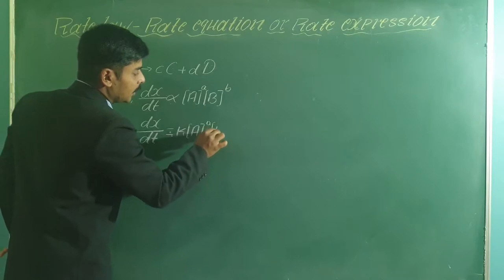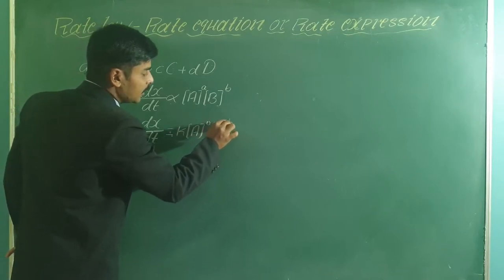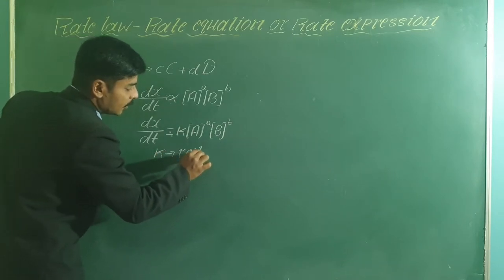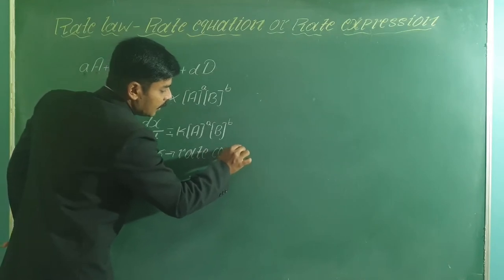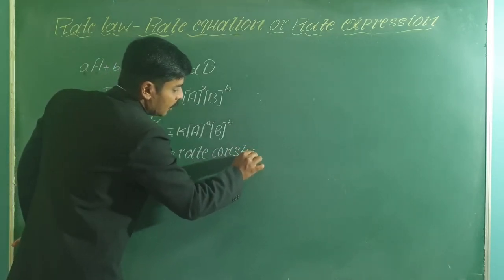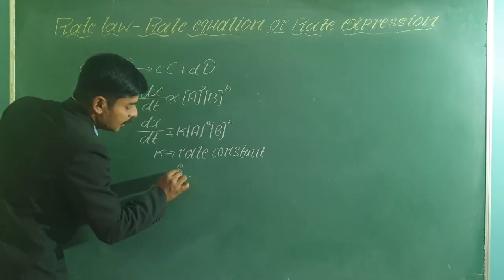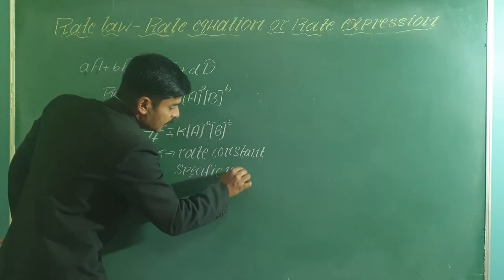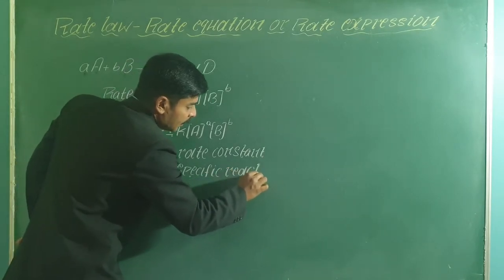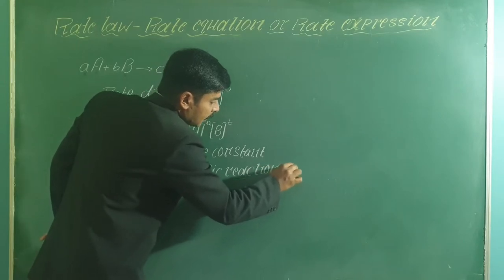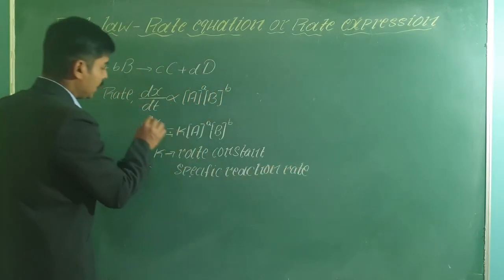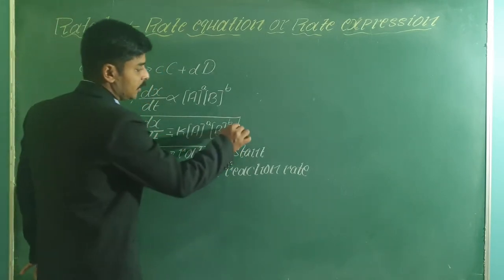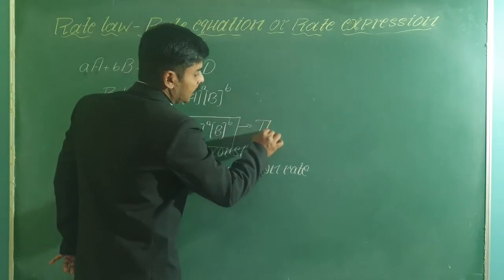The constant K is called the rate constant, also called the velocity constant or specific reaction rate. This expression is called the theoretical rate expression.